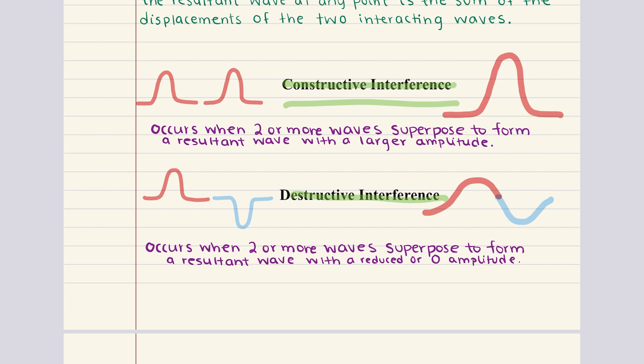Constructive interference happens when two waves that are in phase overlap. This results in a new wave with a larger amplitude than either of the original waves, meaning that the energy of the wave is amplified. Constructive interference is the reason why sounds can seem louder when multiple sound waves align, or why bright spots appear in light interference patterns.